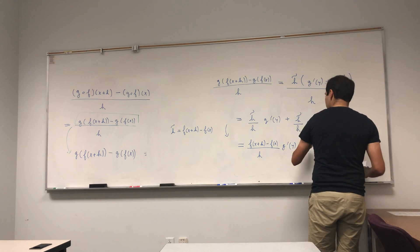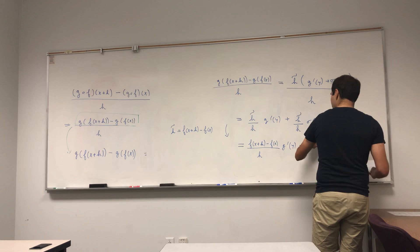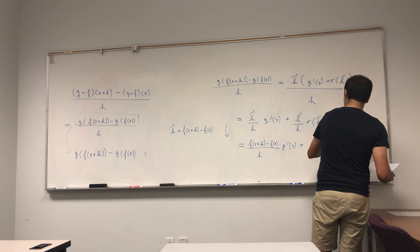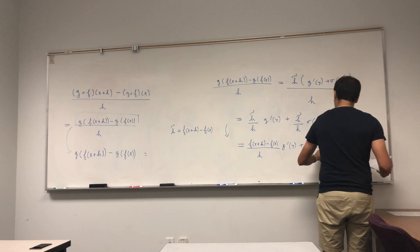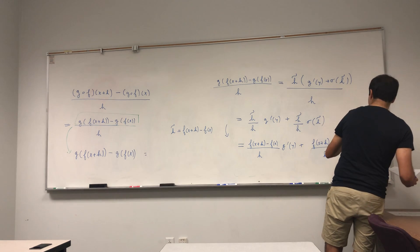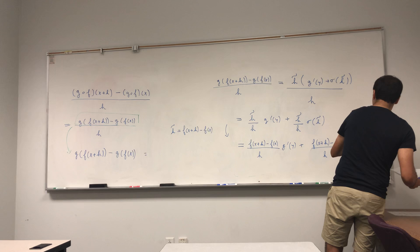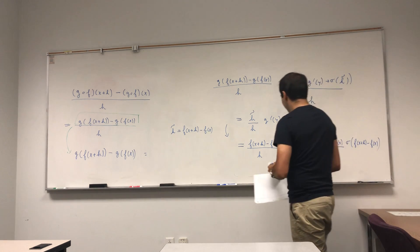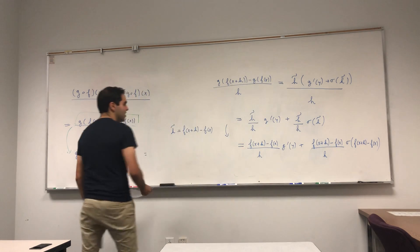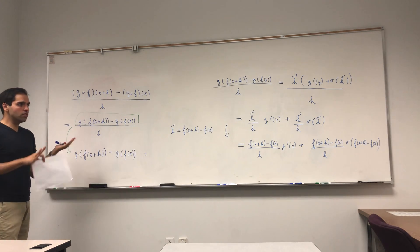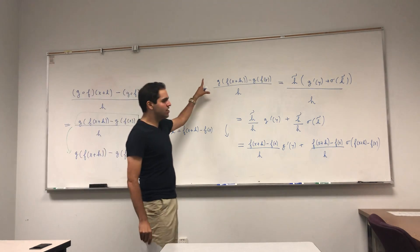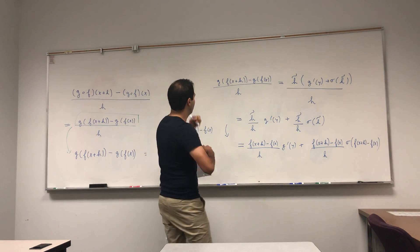Now, h-tilde was f of x plus h minus f of x. So we get: f of x plus h minus f of x over h, times g prime of y, plus f of x plus h minus f of x over h, times sigma of f of x plus h minus f of x.